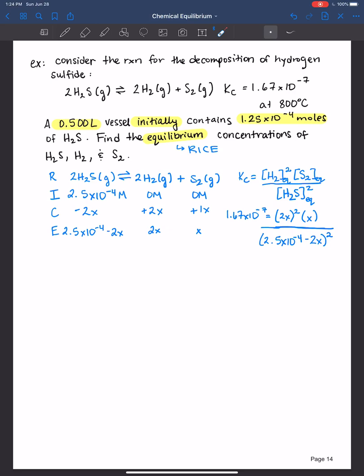So we always want to check, can we ignore x? Is x small enough to ignore? We can ignore plus or minus x, in this case minus 2x, if it's small enough to ignore. Then essentially it's like seeing it's zero. It's insignificant compared to the initial concentration. Then we just solve for x from there. So we have 1.67 times 10 to the negative 7th is equal. I'm just going to simplify a little bit more. 4x cubed over 2.5 times 10 to the negative 4th squared. Therefore, in this case, x would be equal to 1.3767 times 10 to the negative 5th.